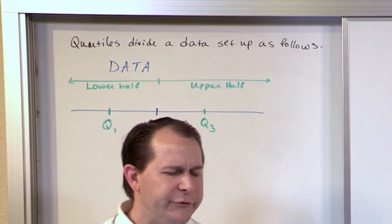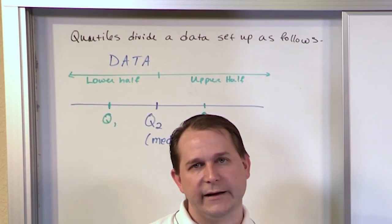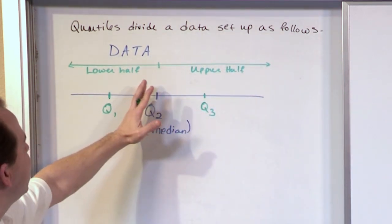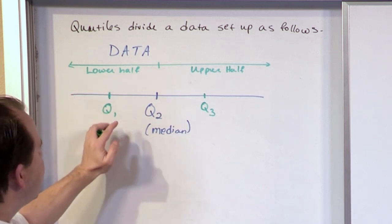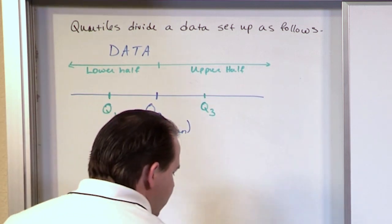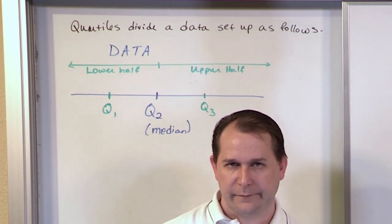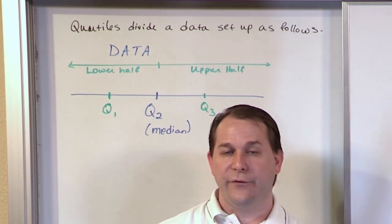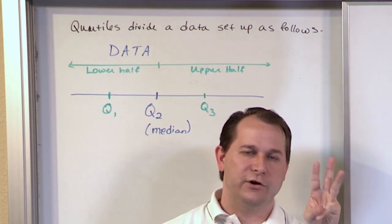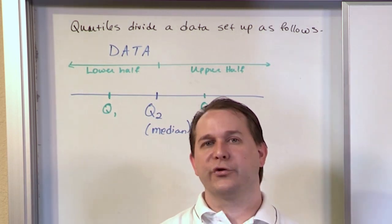So literally, the quartiles divide your data set up just like what's on the board. You have the very middle of the road called Q2, which is the median. And then everything lower than that, you chop it in half again, that's called Q1. And then everything above that, you chop it again, and it's called Q3. Now the thing that's weird about quartiles — when I hear the word quartiles, I think quarters, so I think you're going to have four quartiles. You've got to get that out of your head. There are three numbers, Q1, Q2, and Q3, that refers to the quartiles. There is no Q4.